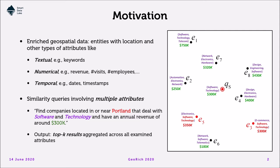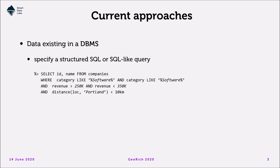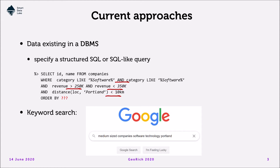What can we do to provide responses to such similarity search queries? If the data resides in a DBMS, we could specify an SQL query involving all the attributes. But the difficulty is how to express the various criteria and their conjunction — for instance, what numerical range of interest to use, since similarity search is not natively supported in DBMS, and what spatial distance range to search for qualifying candidates. And if all this were resolved, how to order and rank the results? If the data is on the web, you could do keyword search, but specifying suitable keywords is difficult, and you shouldn't bet on getting meaningful results unless you're feeling very, very lucky.